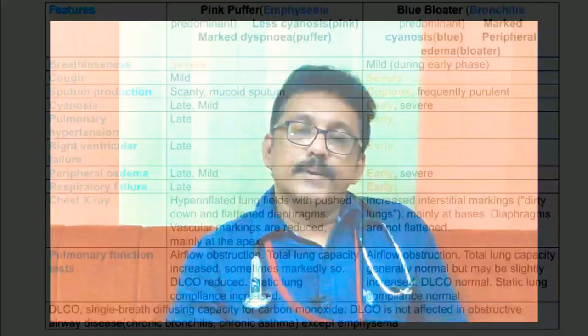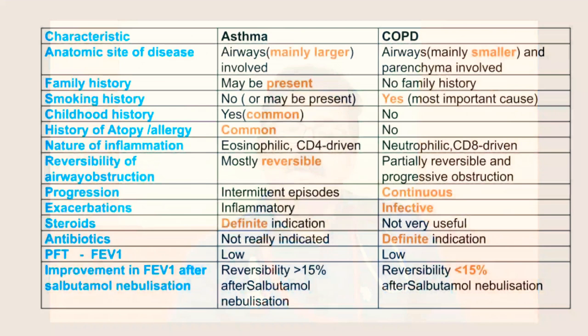Comparing asthma and COPD: asthma is predominantly a larger airway disease while COPD involves smaller airways. Family history, atopy, and allergy are more common in asthma; smoking history is more common in COPD. Reversibility is mainly seen in asthma; progression is continuous in COPD. Exacerbations are more infective in COPD and more inflammatory in asthma. Corticosteroids are very useful in asthma but less so in COPD, while antibiotics are more useful in COPD.